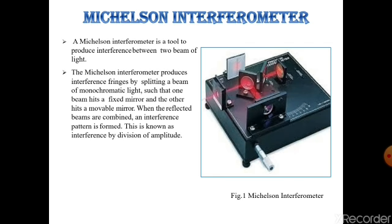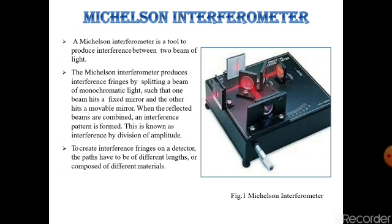This is known as interference by amplitude. To create interference fringes on a detector, the paths have to be of different lengths or composed of different materials.